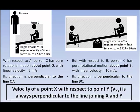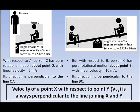From this example, we can conclude one important thing: whenever we want to find the velocity of point X with respect to point Y — denoted as velocity of X with respect to Y — that velocity is always perpendicular to the line joining X and Y. For example, in the case of person A on the ground, the velocity is perpendicular to the line joining the ground center O and person C. In the case of person B, the velocity is perpendicular to the line joining B and C.